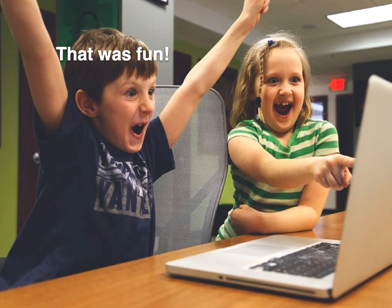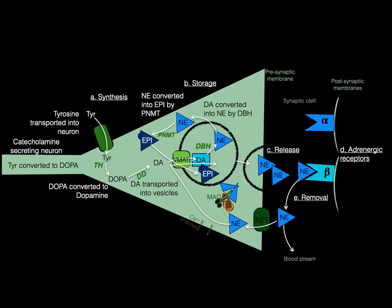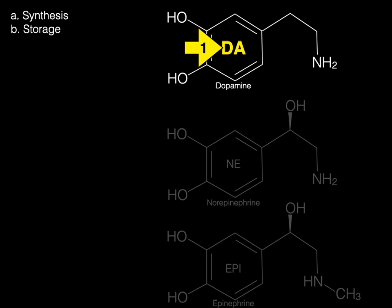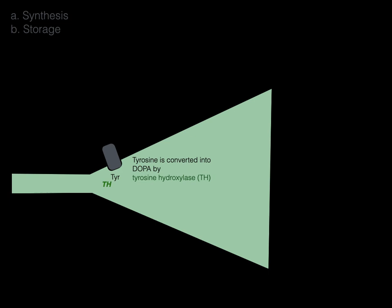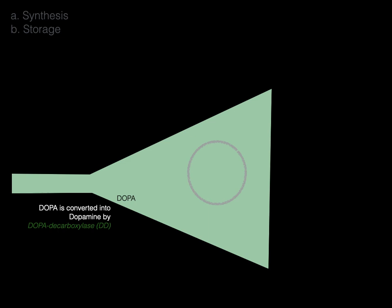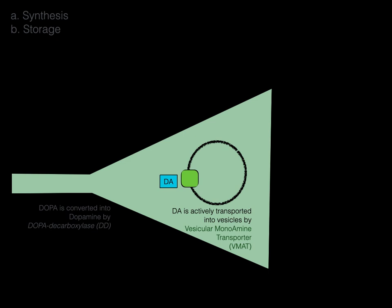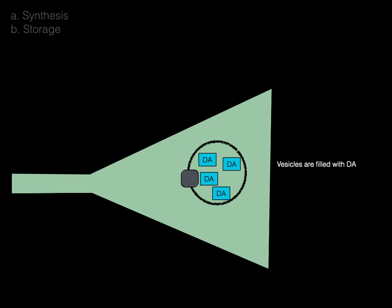Now let's use this diagram and start with the synthesis and storage of dopamine. In a catecholamine-secreting neuron, tyrosine is transported in via active transport, where tyrosine hydroxylase converts it into DOPA — dihydroxyphenylalanine. Then DOPA decarboxylase converts DOPA into dopamine. Dopamine is then actively transported into vesicles by the vesicular monoamine transporter, or VMAT. Now the vesicles are filled with dopamine.